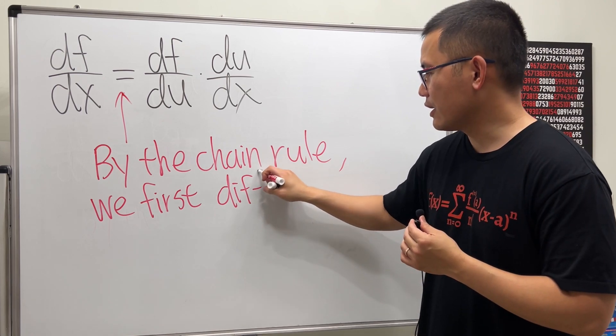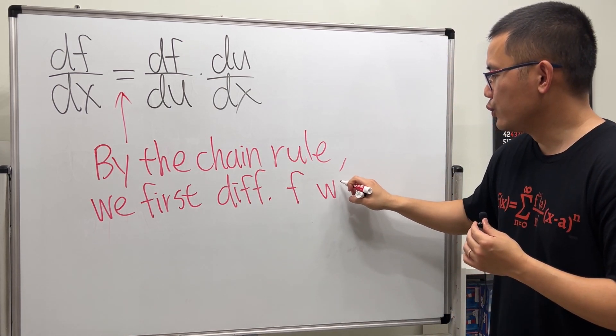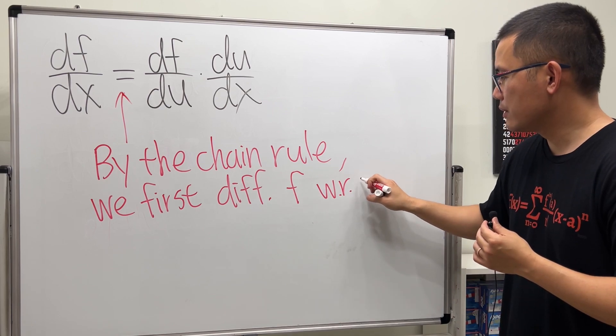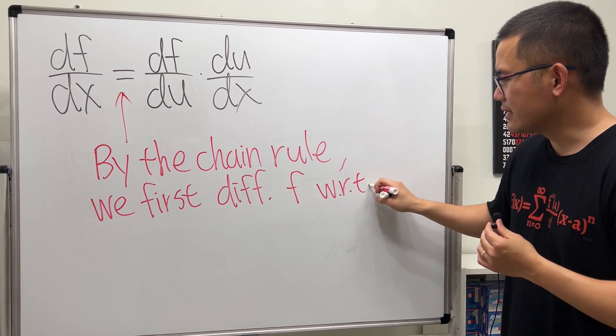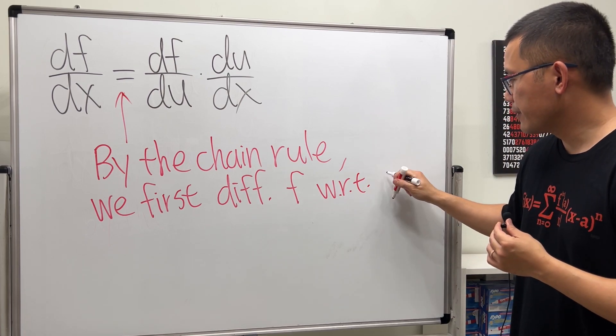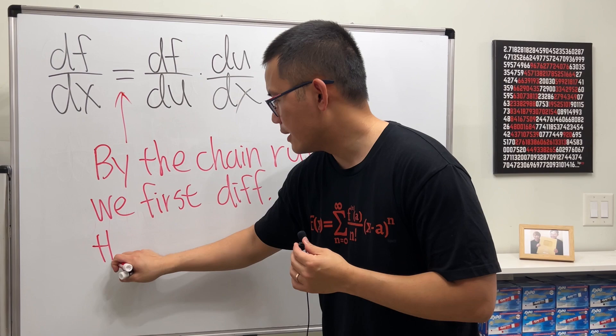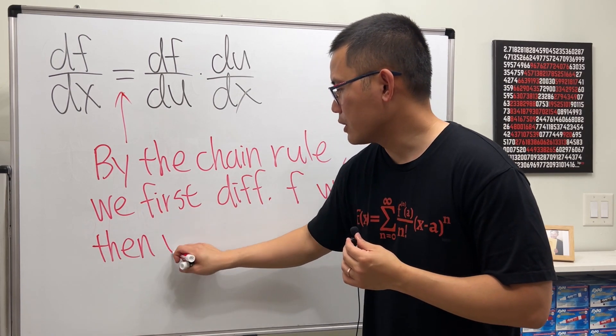differentiate - I'm not going to spell out everything - just differentiate f with respect to u. Yeah, I think this is how people abbreviate 'with respect to' u. Yeah, then we multiply...